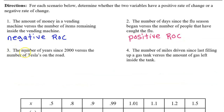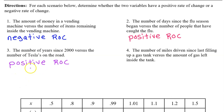Number three: the number of years since 2000 versus the number of Teslas on the road. These two quantities will have a positive rate of change. Every year there are more Teslas on the road, so as the number of years since 2000 increases, the number of Teslas on the road also increases.